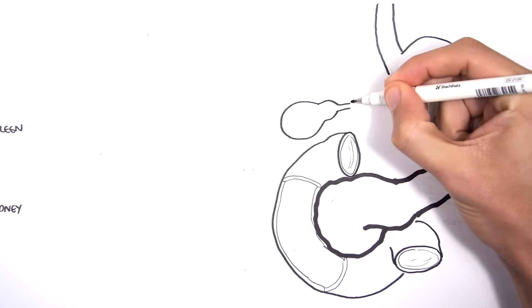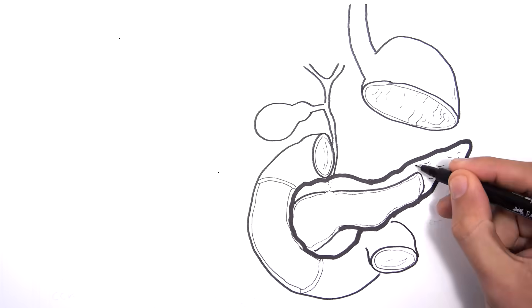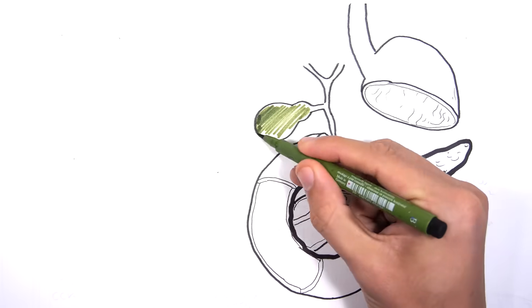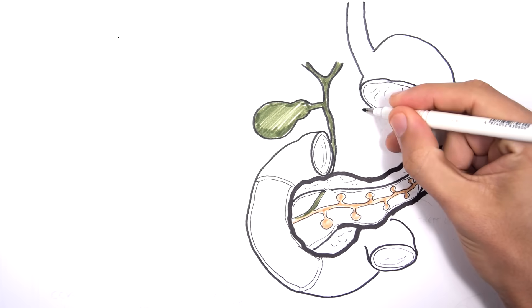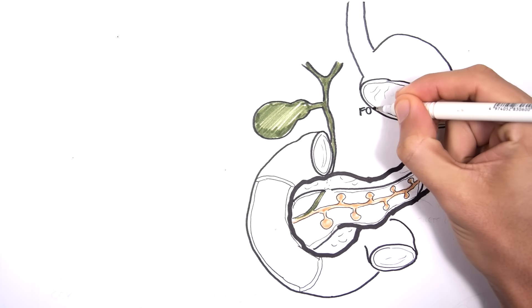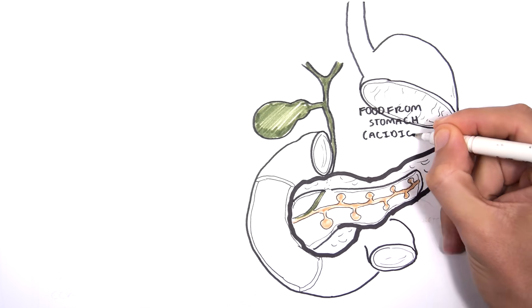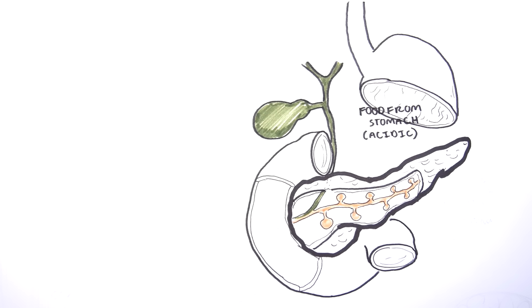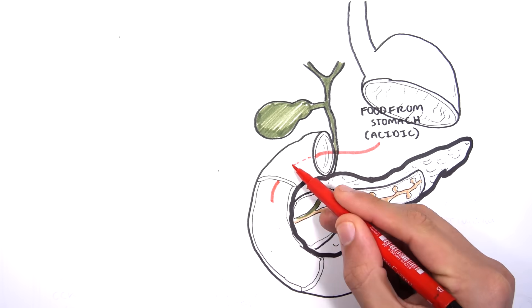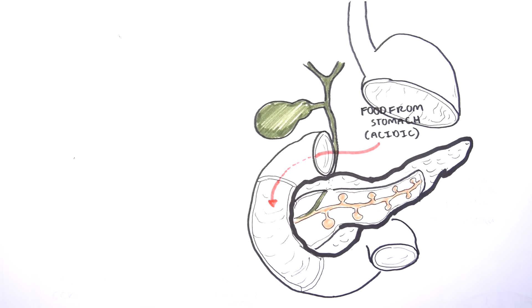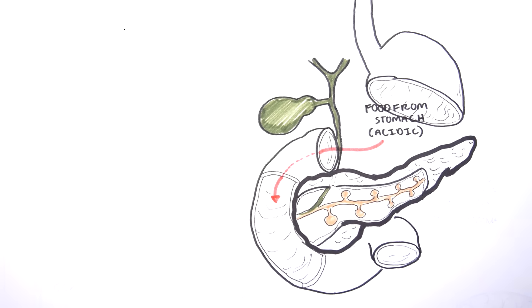When we eat, food is in the stomach where acid is produced, helping the first phase of digestion. Food then enters the duodenum, the first part of the small intestine.